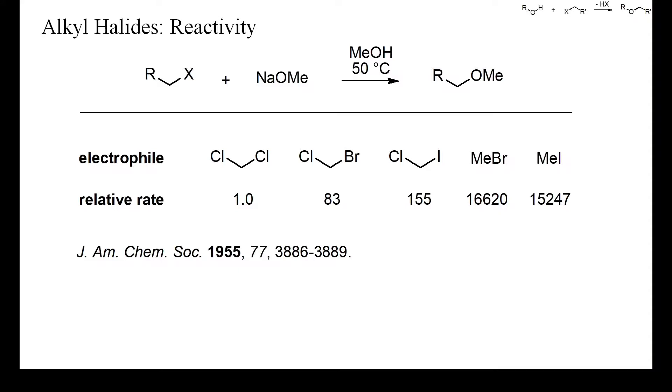I chose alpha-chlorohalides as example because I couldn't find any other. Alpha-chloroelectrophiles are much less reactive than simple alkyl chlorides. As shown in the table, methyl bromide reacts about 200 times faster with sodium methoxide than bromochloromethane. And dichloromethane is surprisingly unreactive toward nucleophiles if compared with methyl or ethyl chloride.